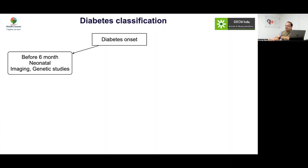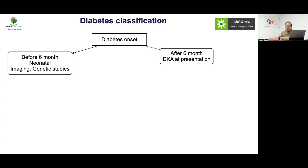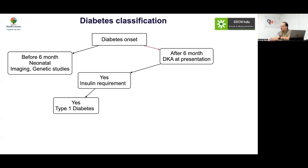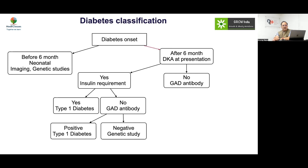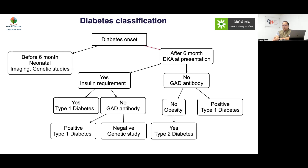If onset is before 6 months, it is usually neonatal diabetes — go for imaging and genetic studies. After 6 months with DKA presentation and insulin requirement, this is type 1. With no insulin requirement, do a GAD antibody to classify type 1 versus genetic. If there is no DKA presentation beyond 10 years, do a GAD antibody to classify type 1 versus type 2 and MODY. The main things to assess are: age of onset, need for insulin, and whether the child is obese. These three are the major criteria.